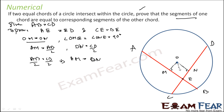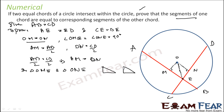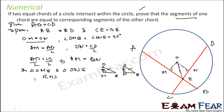Let's join OE and consider triangle OME and triangle ONE. OE is the common side. Angles OME and ONE are both 90 degrees. OM equals ON. Using RHS we can say these two triangles are congruent. Therefore ME equals NE.